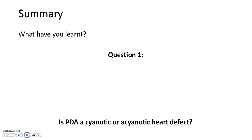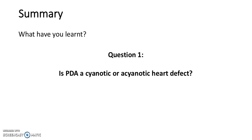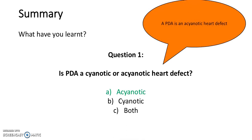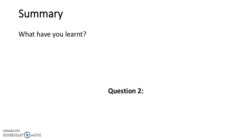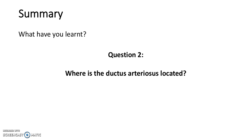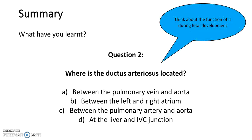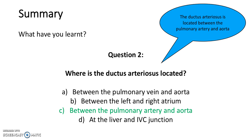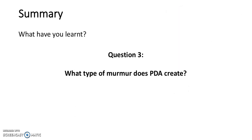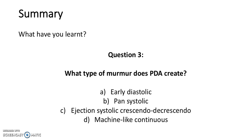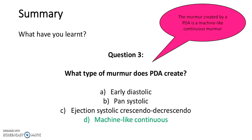In summary, let's go back over the questions from before. Is a PDA a cyanotic or an acyanotic heart defect? It's acyanotic. Where is the ductus arteriosus located? It's between the pulmonary artery and the aorta. What type of murmur does PDA create? It's machine-like continuous. Well done guys, that's the end of the slideshow. Come back for some more revision material.